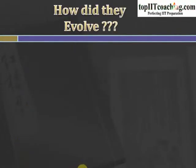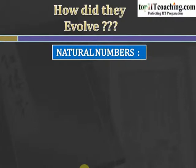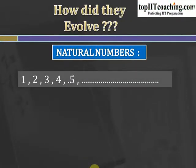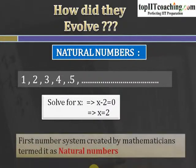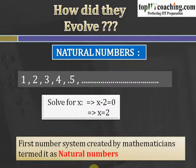The very first doubt is: how did this system of complex numbers evolve? To find an answer we go back to ancient times. The first numbers that evolved were the natural numbers: 1, 2, 3, 4, 5 and so on. For example, if we have an equation x minus 2 equals 0, then x equals 2, which is a natural number. So the first number system created by mathematicians was termed natural numbers.